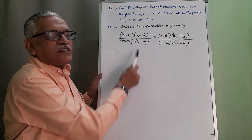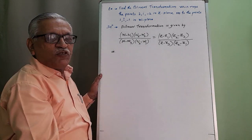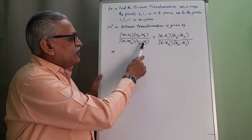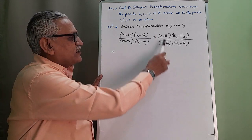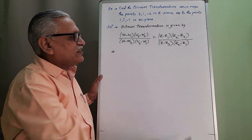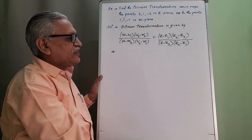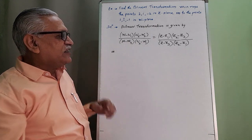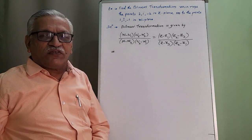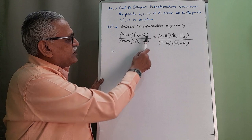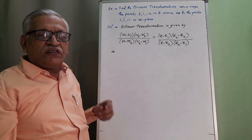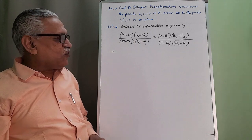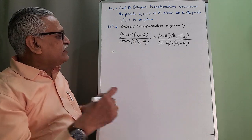That is: (w minus w1) multiplied by (w2 minus w3), divided by (w minus w3) into (w2 minus w1), equals (z minus z1) into (z2 minus z3), divided by (z minus z3) into (z2 minus z1). The suffix in the numerator is 1, 2, 3 and in the denominator it is in the order 3 to 1 — a technique to remember the formula. Then substitute the values.